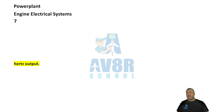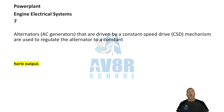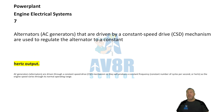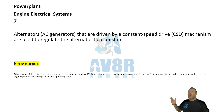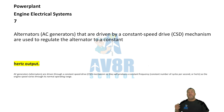Number 7. AC generators that are driven by a constant speed drive mechanism are used to regulate the alternator to a constant Hertz output.